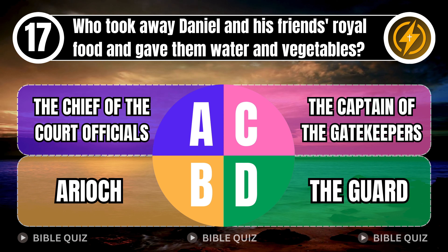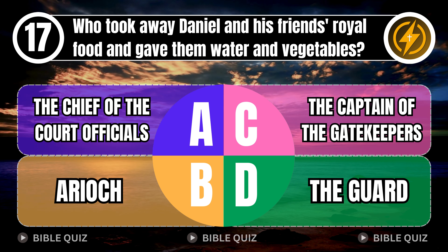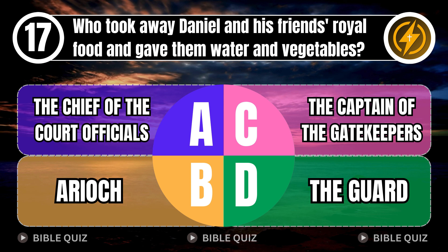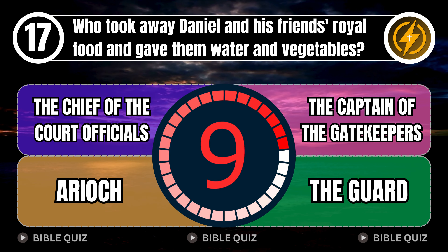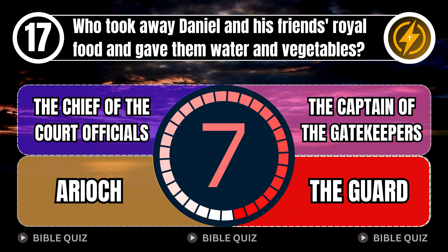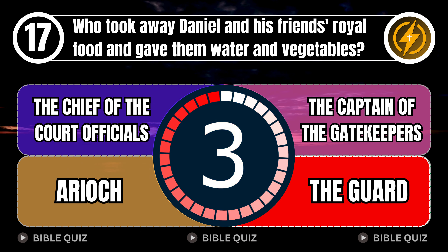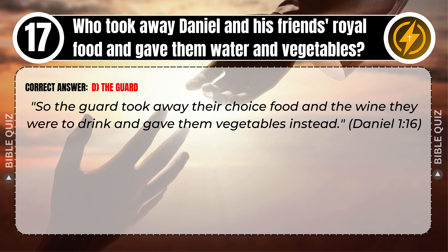Question 17: Who took away Daniel and his friends' royal food and gave them water and vegetables? A. The chief of the court officials. B. Arioch. C. The captain of the gatekeepers. D. The guard. Correct answer: D. The guard. Explaining the Bible — so the guard took away their choice food and the wine they were to drink and gave them vegetables instead. Daniel 1 verse 16.